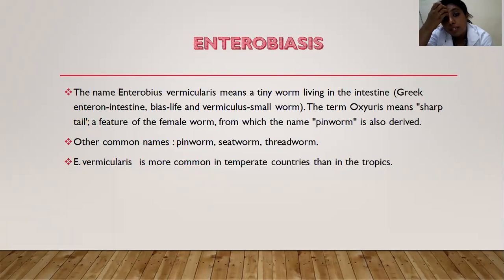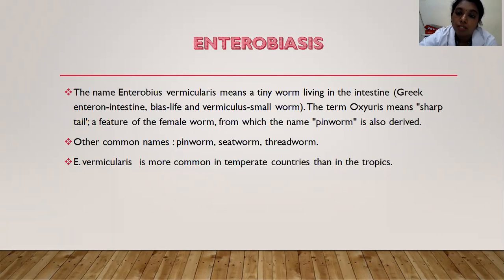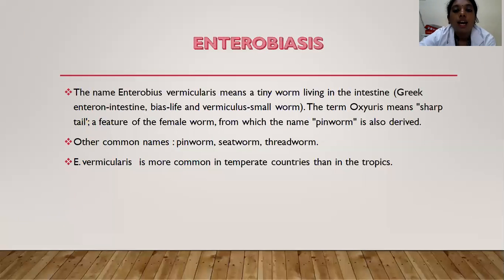The last important nematode is Enterobiasis. The name Enterobius vermicularis means a tiny worm living in the intestine — Greek enteron means intestine, bios means life, vermiculus means small worm. The term oxyuris means sharp tail, which is a feature of the female worm from which the name pinworm is derived. Other common names are pinworm, seat worm (since it is found in the seat area), and thread worm.